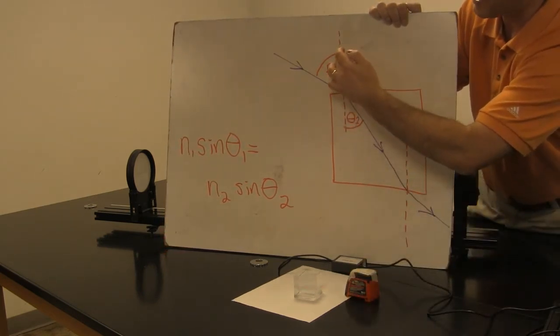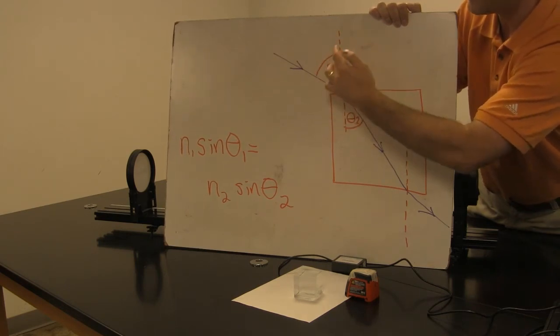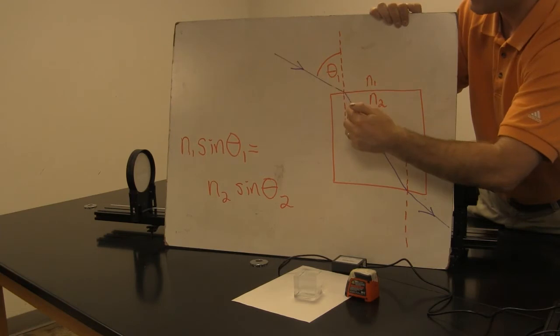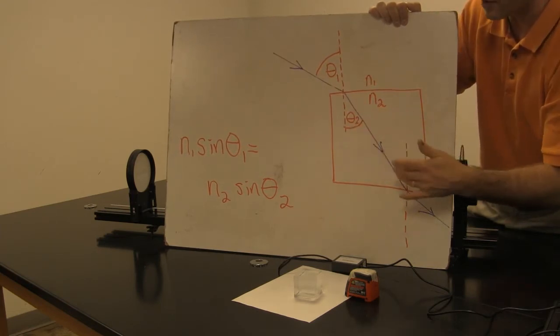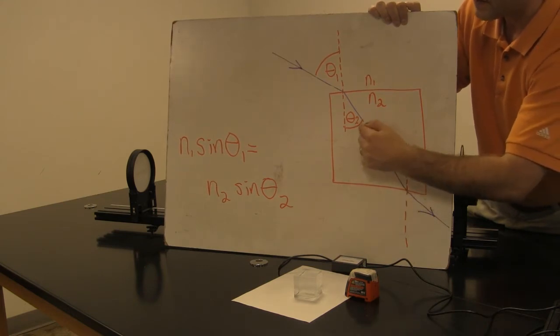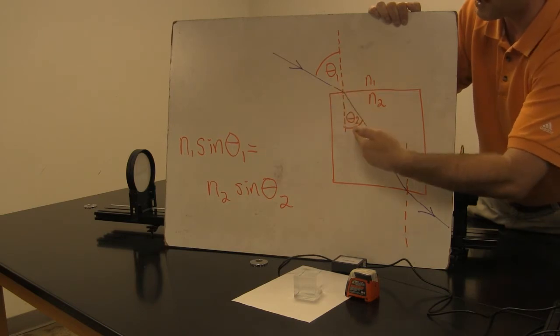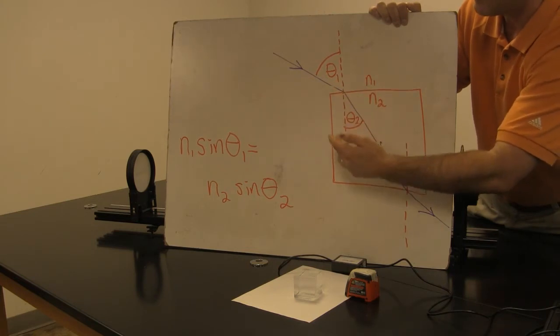There's an angle that you can measure with respect to the normal line and the incoming ray. After you lift the traced glass and continue to draw your line through before you turn the laser off and move it, you have this other angle, which is the angle between the refracted ray through the glass and the normal line that passes through the glass as well. These two angles, theta one and theta two.